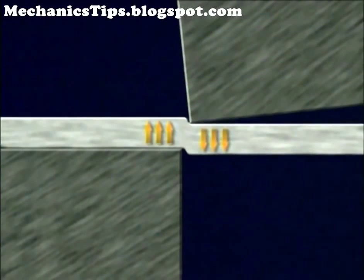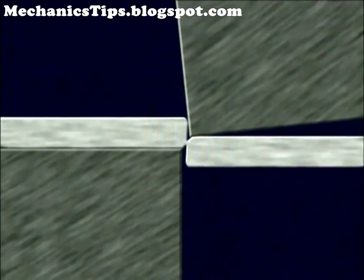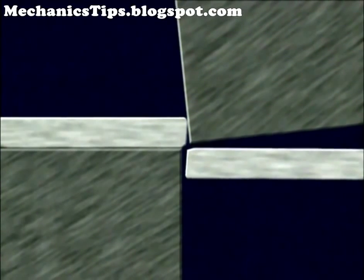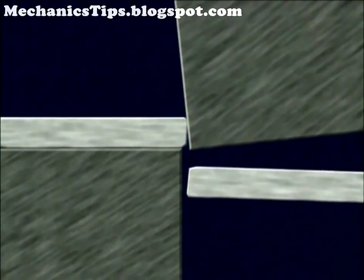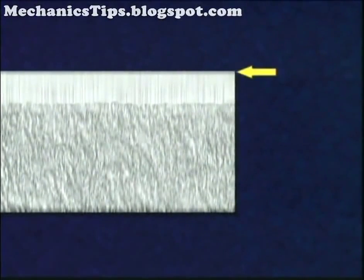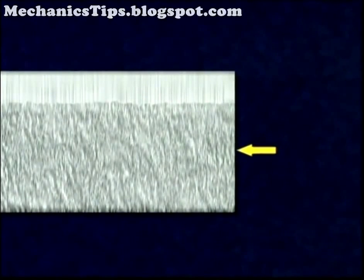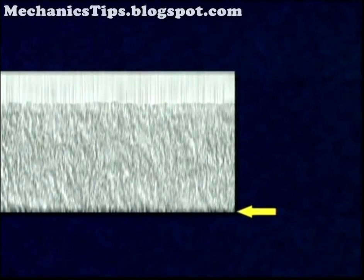As the blades come together and contact the workpiece, they partially penetrate the material. This builds up opposing forces in the stock. A crack or tear called the slip plane then develops on both sides of the material, separating the stock. The shear blades typically penetrate the stock no more than one-third of the stock thickness before the slip plane occurs. The exact amount of penetration varies with material hardness and knife clearance.